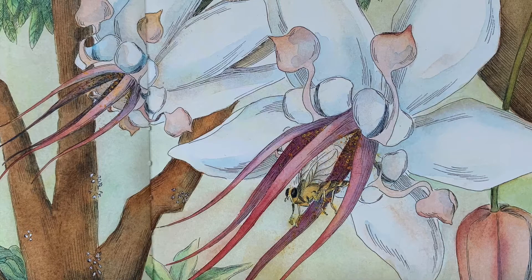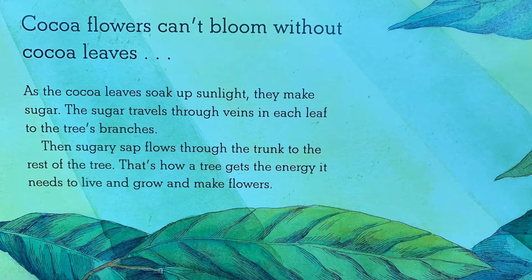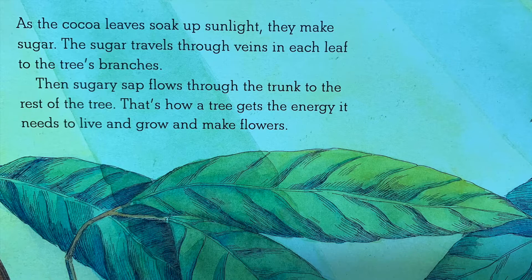Cocoa flowers can't bloom without cocoa leaves. As the cocoa leaves soak up sunlight, they make sugar. The sugar travels through veins in each leaf to the tree's branches. Then sugary sap flows through the trunk to the rest of the tree. That's how a tree gets the energy it needs to live and grow and make flowers.